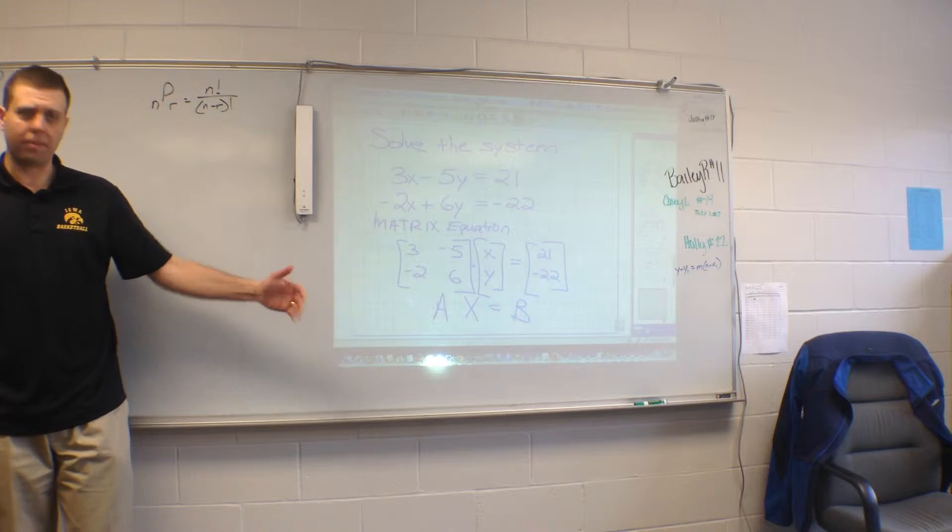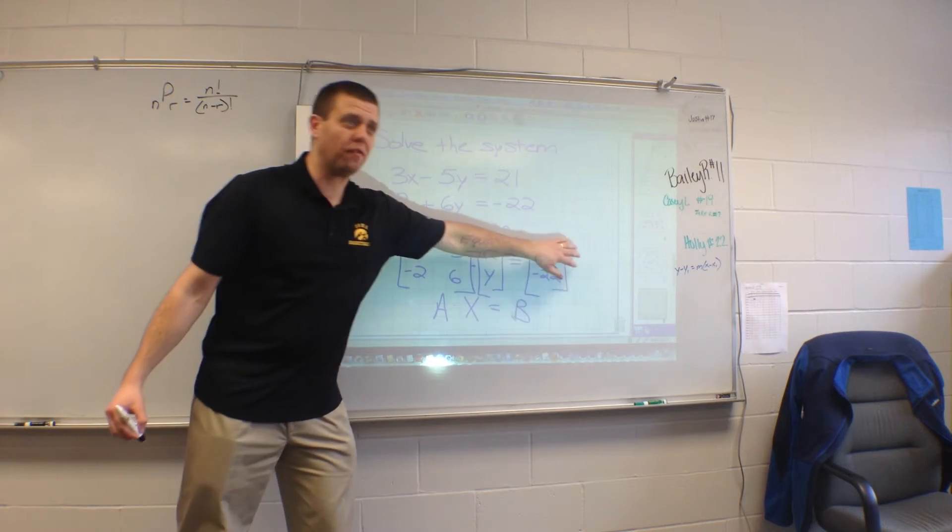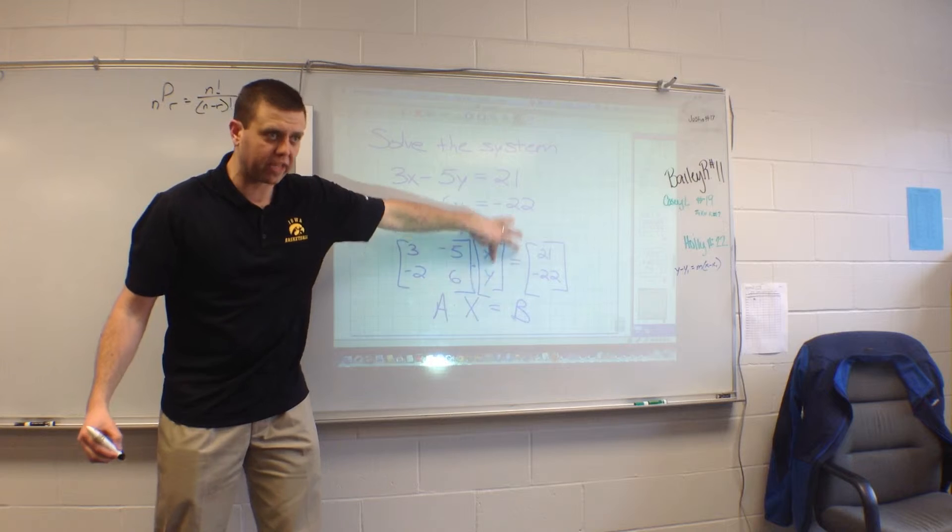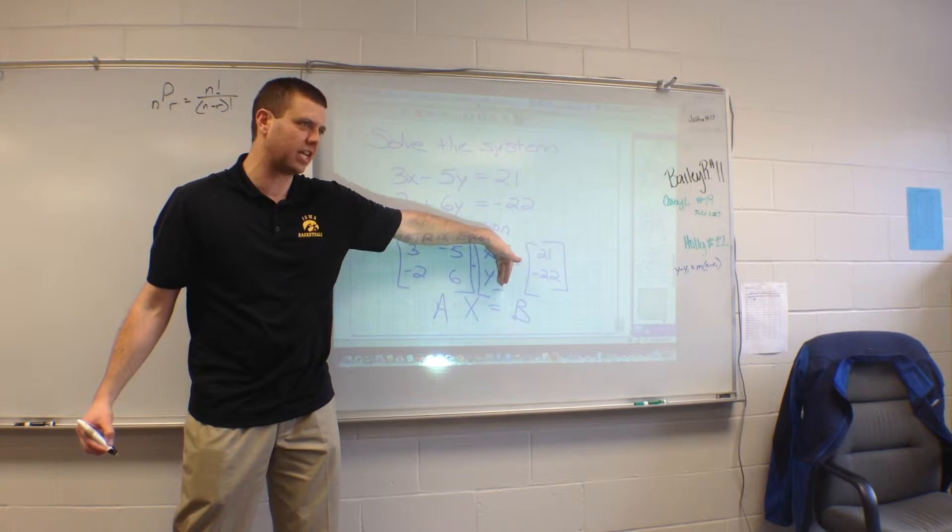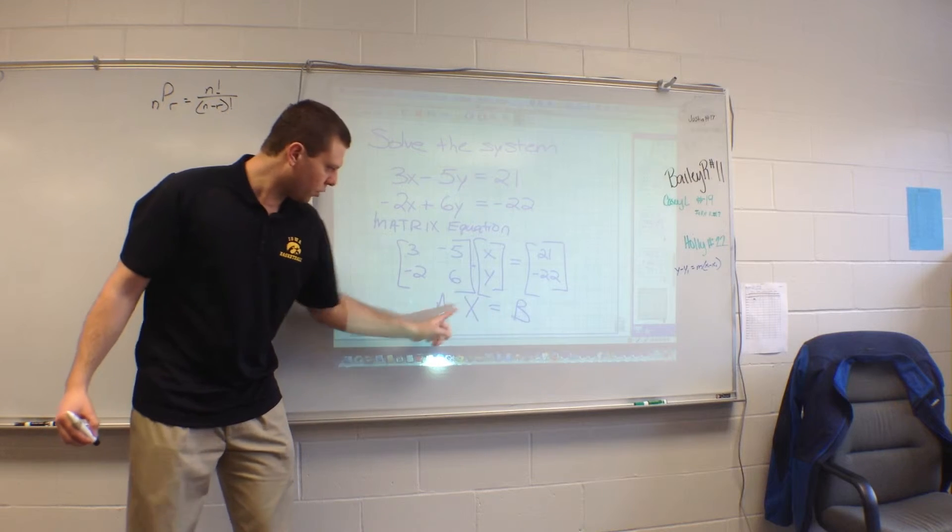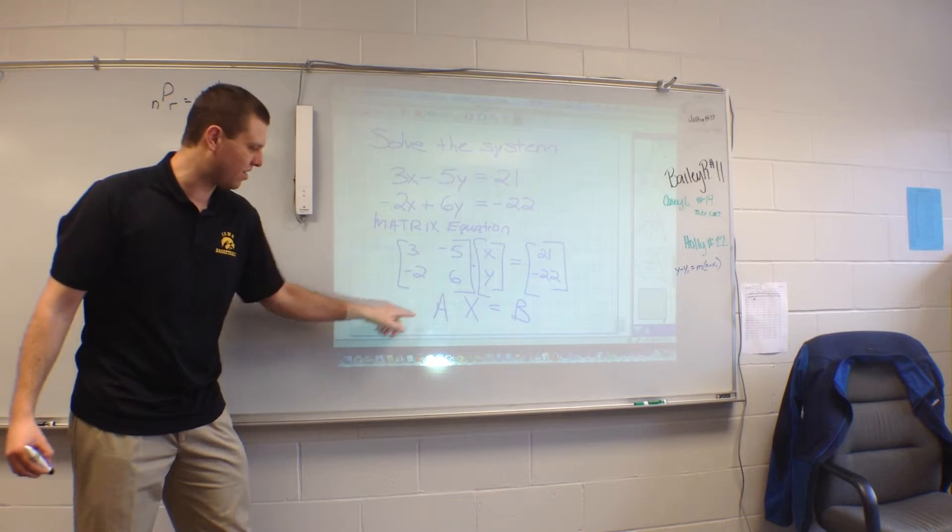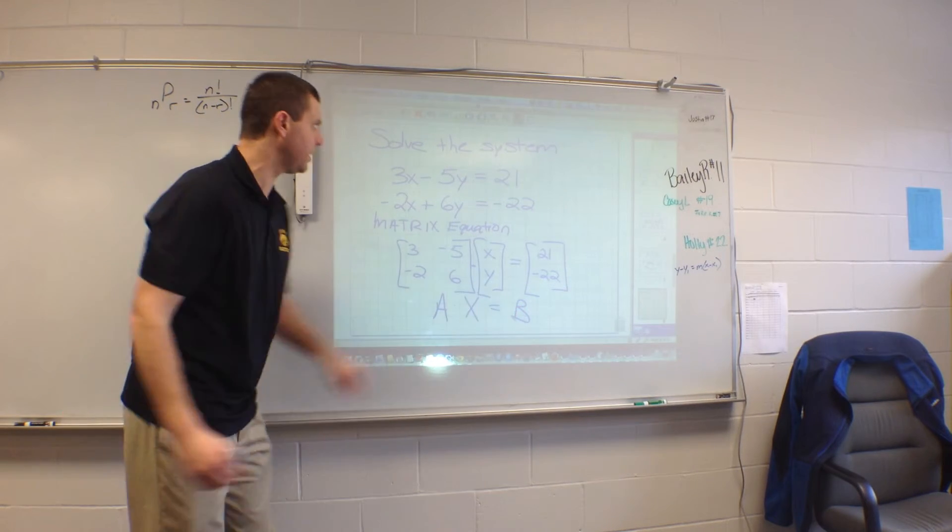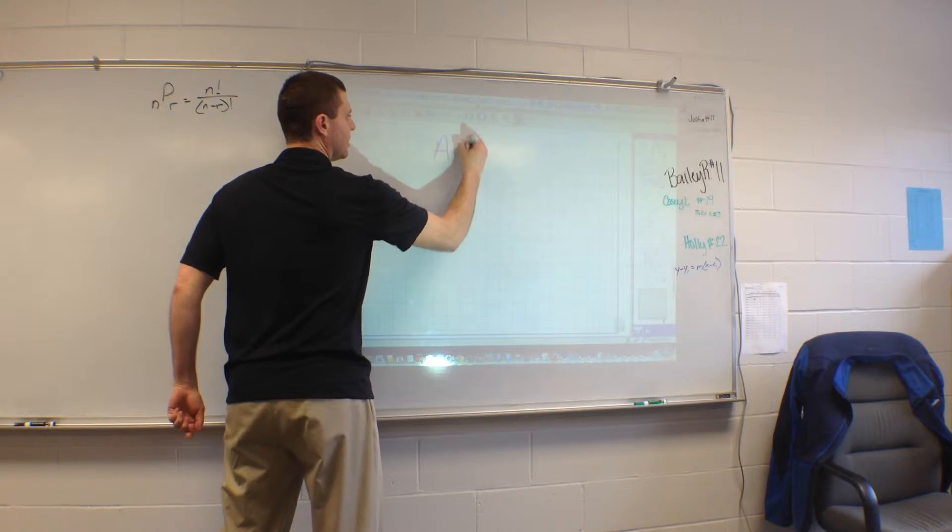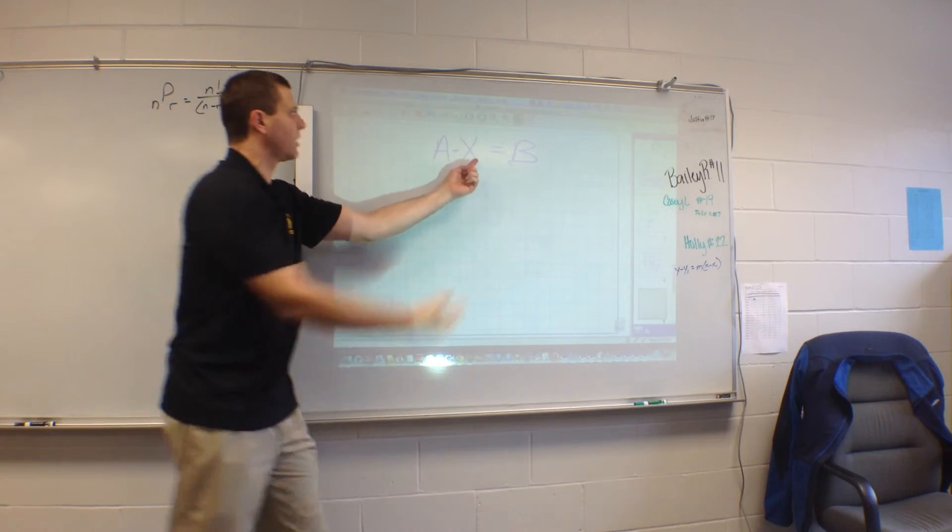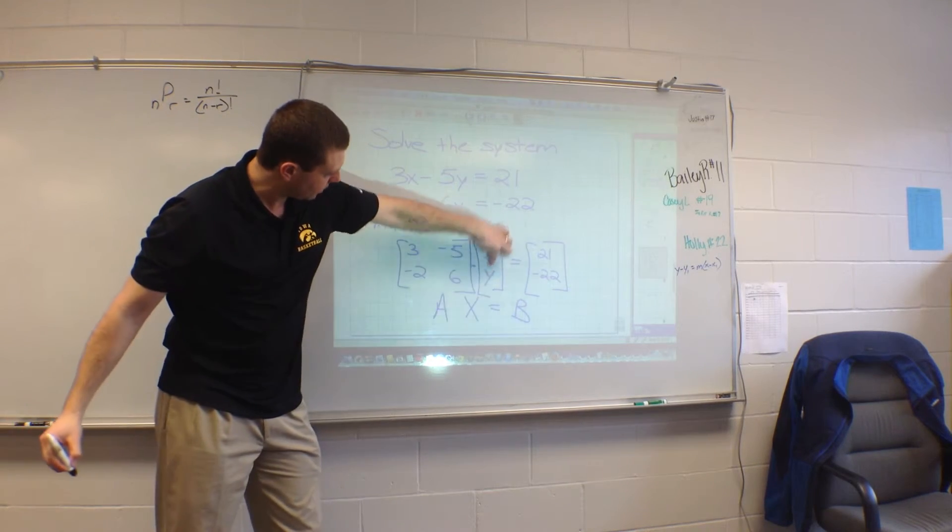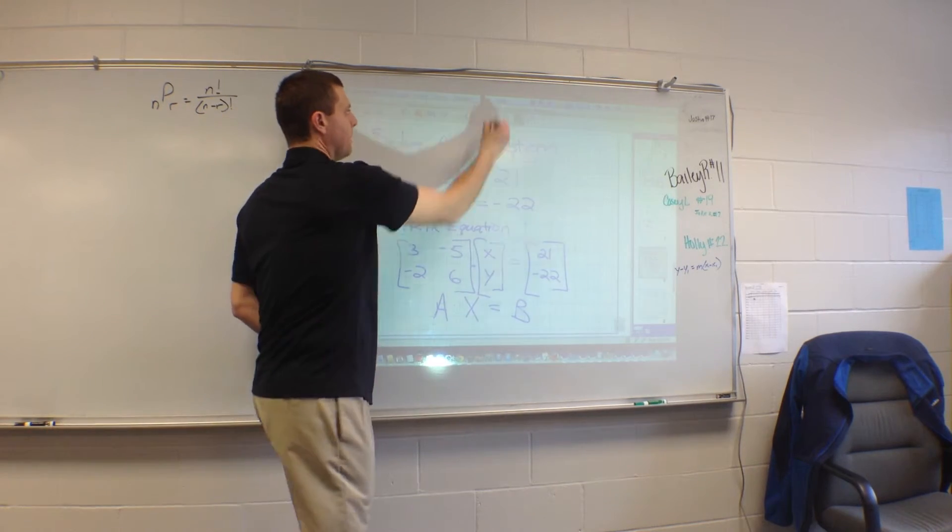So our job, like I said before, when we're solving this equation, is to solve for x, y. We're trying to get this matrix by itself. We're trying to figure out what x, y equals. So in other words, in this little equation down here, A times X equals B. A times X equals B - I'm trying to get X by itself. I'm trying to get this matrix X by itself.